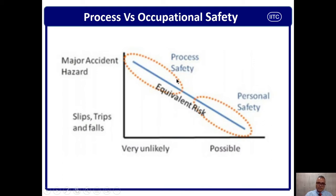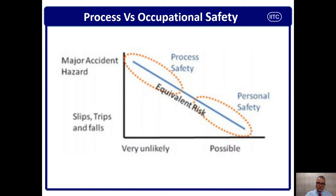Now for process safety on the graph: the process safety is very unlikely in terms of frequency and likelihood, but the severity is MAH — major accident hazard. When we say major accident hazard, that means this event can kill many people at one point in time. It has huge impact on production loss, facility damage and financial loss.